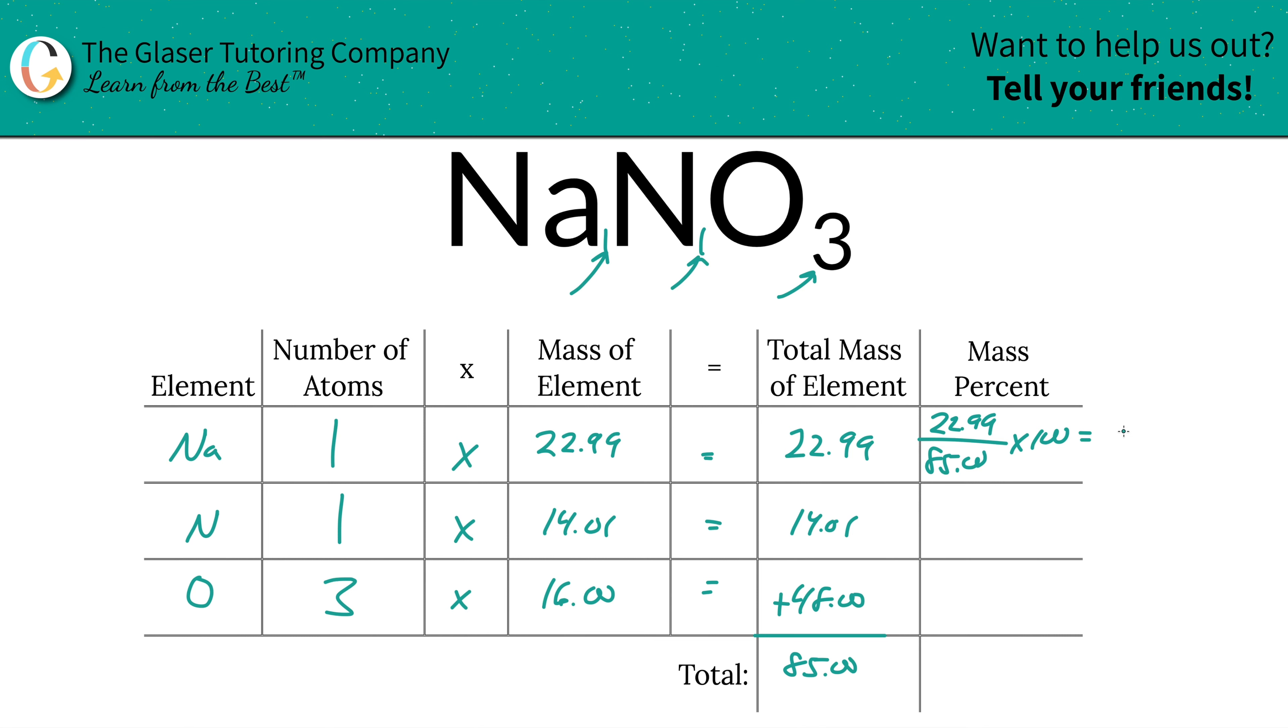Don't worry about the units because they're going to cancel. Percents are unitless. So we get 56.47%. Whatever units you have in the numerator will be the same as the denominator, so they cancel.